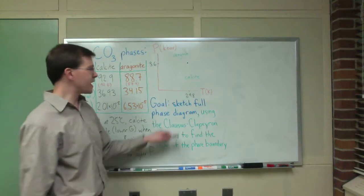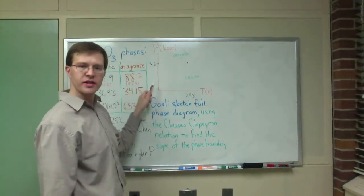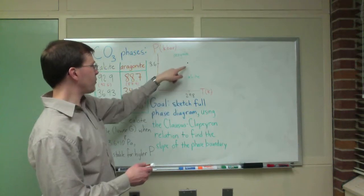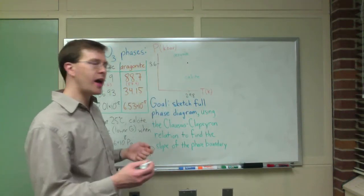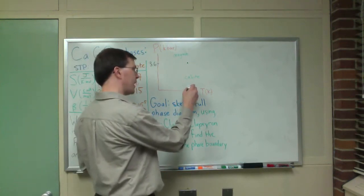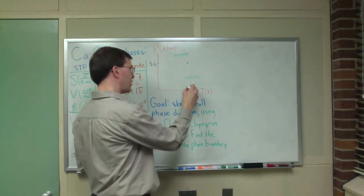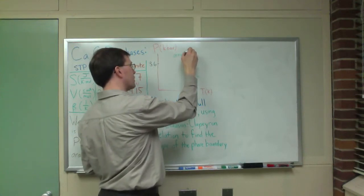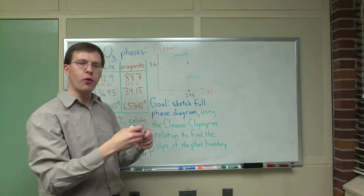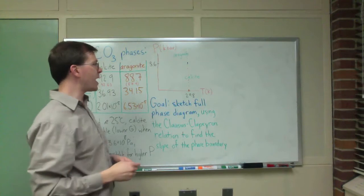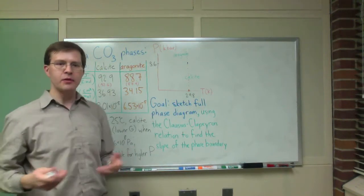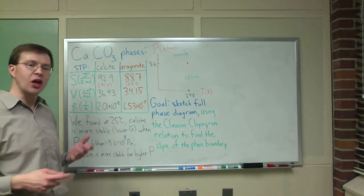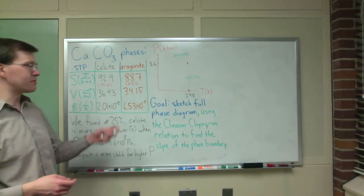I've sketched that out in what's going to be a phase diagram. We have pressure on this axis and temperature on that axis, and I've sketched out the point at 298 Kelvin, 3.6 kilobars, where my transition was. In class, we started at standard temperature and pressure and followed that line upward until we crossed the phase boundary. The key idea is that the more stable state is the one with the lower Gibbs free energy per mole at that temperature-pressure combination.